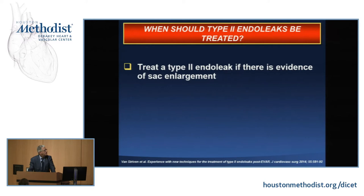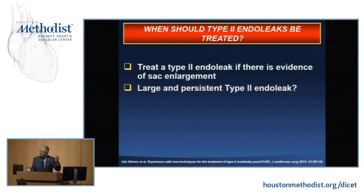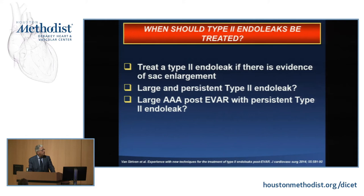We all agree that if there is a type 2 endoleak and the aneurysm is enlarging, we need to fix it. But other scenarios exist — a 7 or 10-centimeter abdominal aneurysm with a persistent endoleak without enlargement in a patient who may never return for follow-up, or a large endoleak without enlargement. Are those causing potential danger? What are you going to do about those?